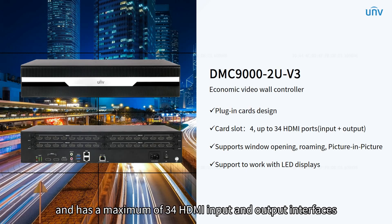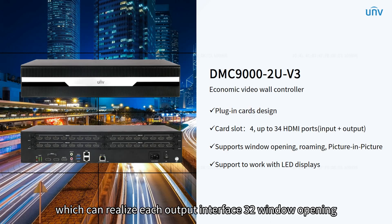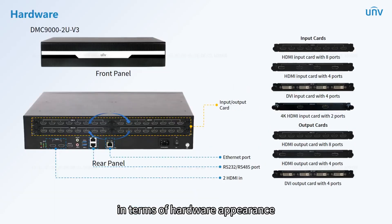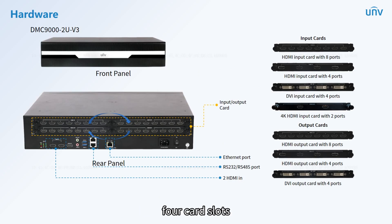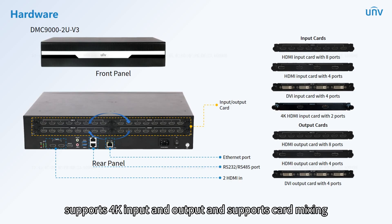The DMC-9002U V3 has a maximum of 34 HDMI input and output interfaces. It has display splicing function, realizing 32 window opening per output interface, window roaming, and picture-in-picture. It supports working with LCD video walls and LED displays. In terms of hardware, it comes with two HDMI input ports, four card slots, supports HDMI and DVI board cards with 2, 4, or 8 ports, supports 4K input and output, and supports card mixing.